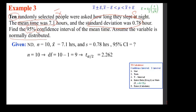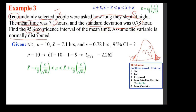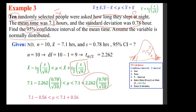Calculate E = t-alpha/2 × S / sqrt(n) = 2.260 × 0.78 / sqrt(10) ≈ 0.56. Then x-bar − E to x-bar + E gives 6.54 to 7.66. We are 95% confident that the true population mean sleep time lies between 6.54 and 7.66 hours.